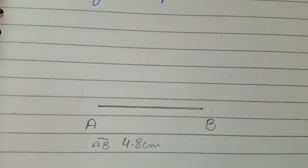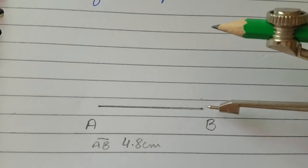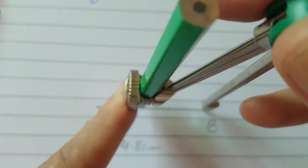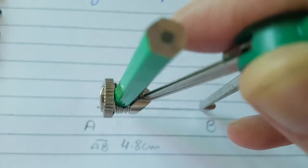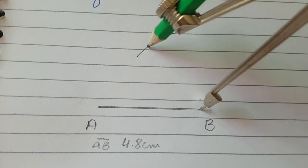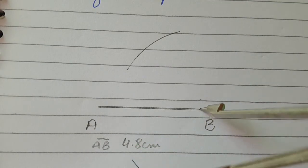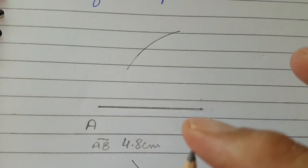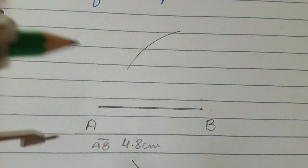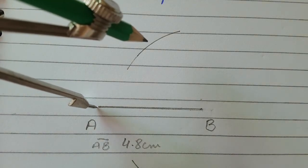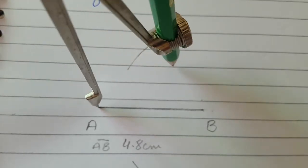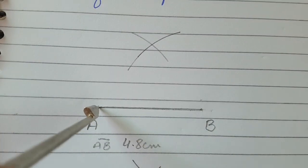Now you have to bisect it. The very first step is you will take your compass and put the needle end on B or A, and open the compass more than half of the line. You will mark two arcs upward and downward of the line. With the same radius — more than half of the line — put your compass on point A and cut the previous arcs at some points. Name these points as P and Q.